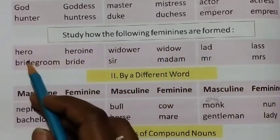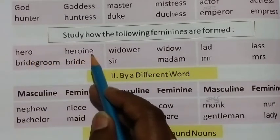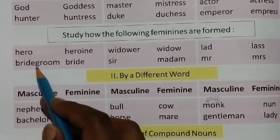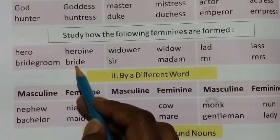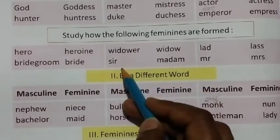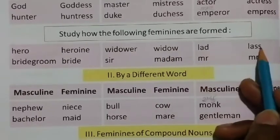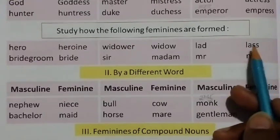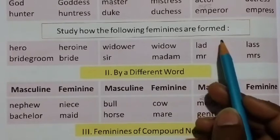Now study how the following feminines are formed. Hero becomes heroine, bridegroom becomes bride, widower becomes widow. Also, sir becomes madam, and Mr. becomes Mrs. These are used only in feminine gender contexts.